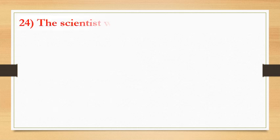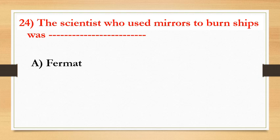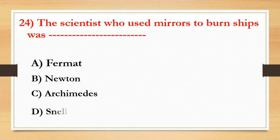The scientist who used mirrors to burn enemy ships was — option A: Fermat, option B: Newton, option C: Archimedes, option D: Snell. The answer is Archimedes.